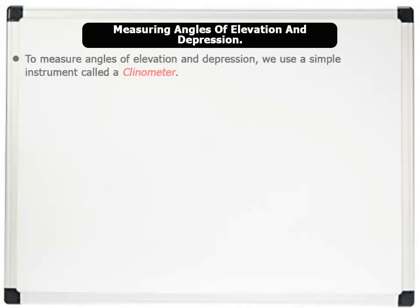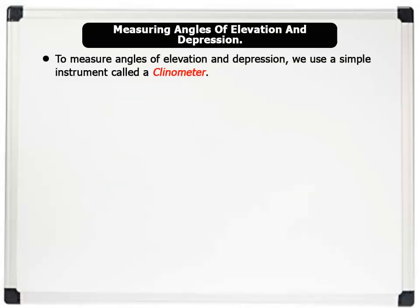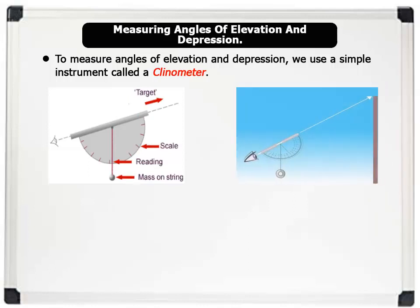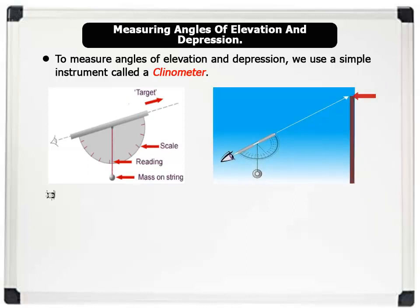Let us now see how to measure angles of elevation and depression. To measure angles of elevation and depression, we use a simple instrument called a clinometer. Below is an image of a clinometer. Notice that it is made up of a scale protractor, a pen tube for viewing objects, and a string or line attached with a mass or weight.